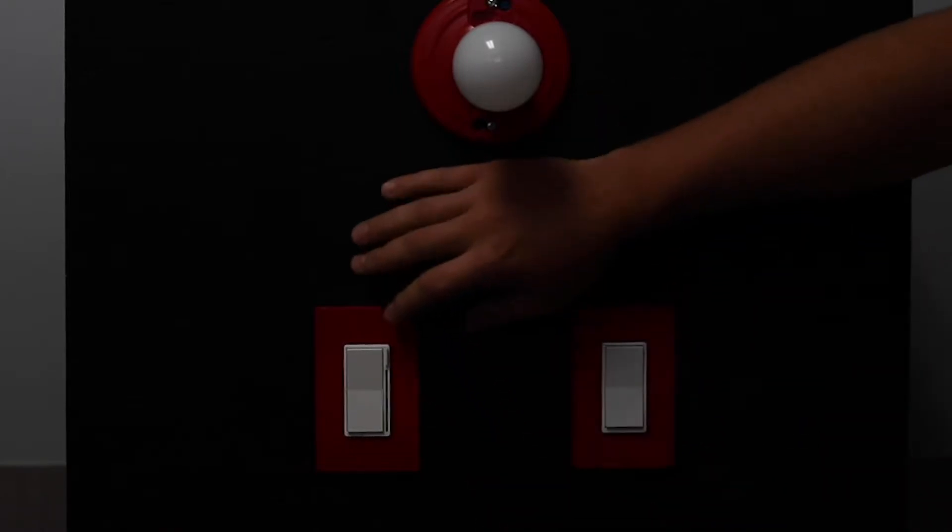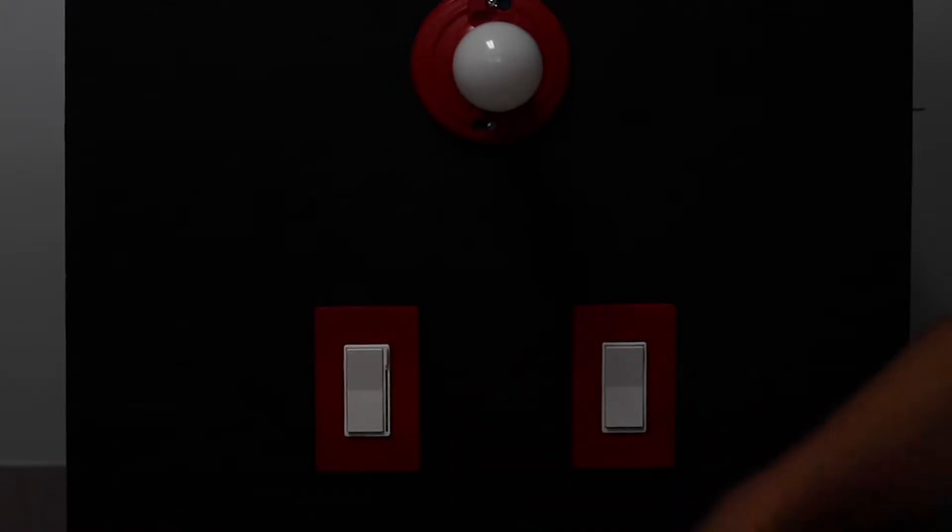We want to set parameter three. Three taps the configuration button. We're now at setting our maximum dim level.